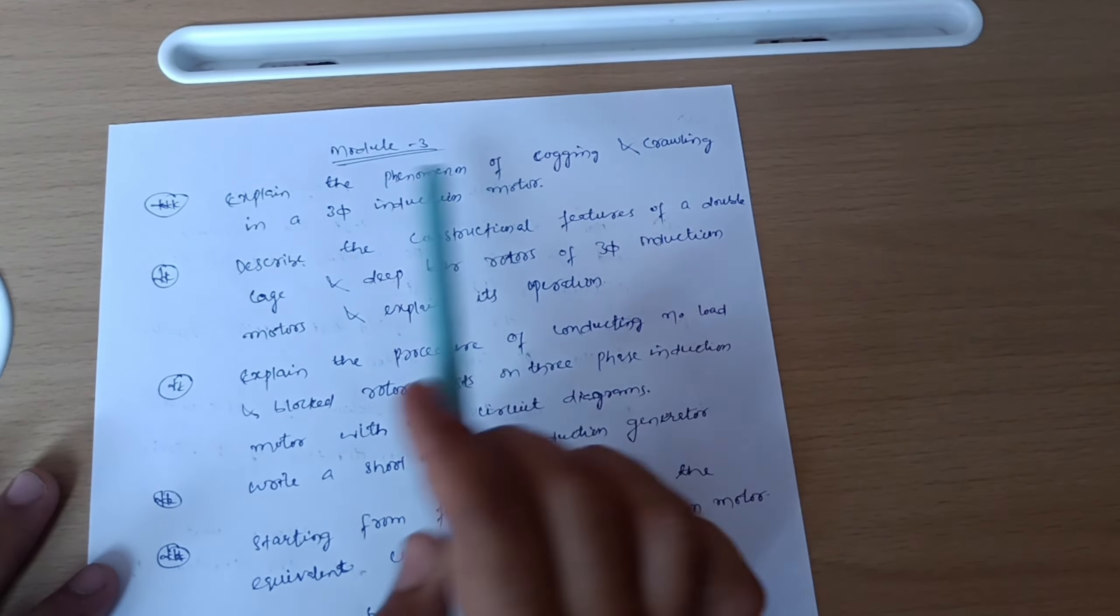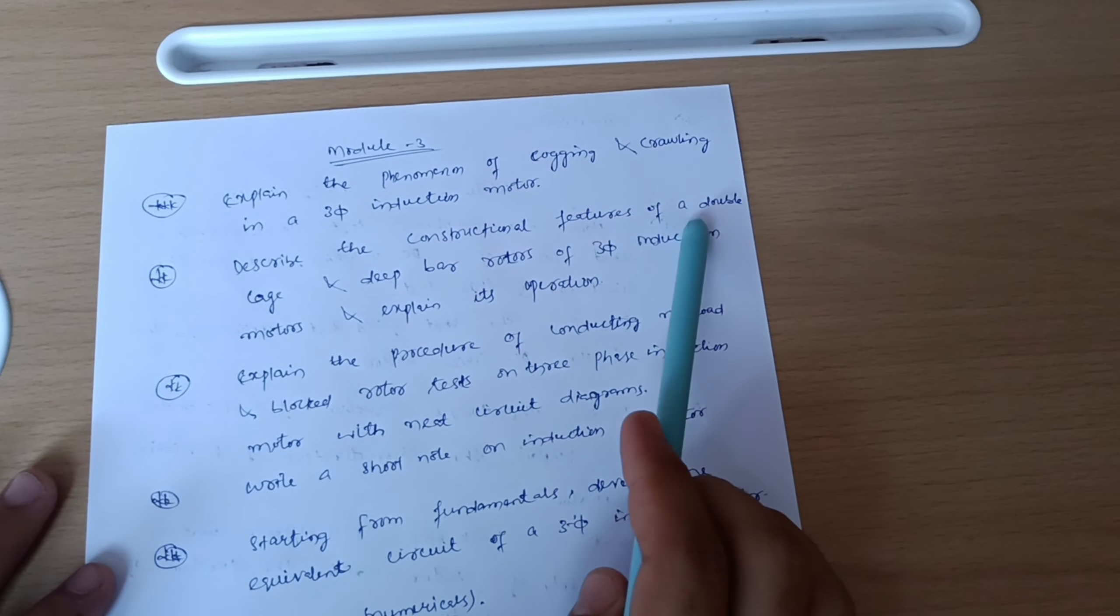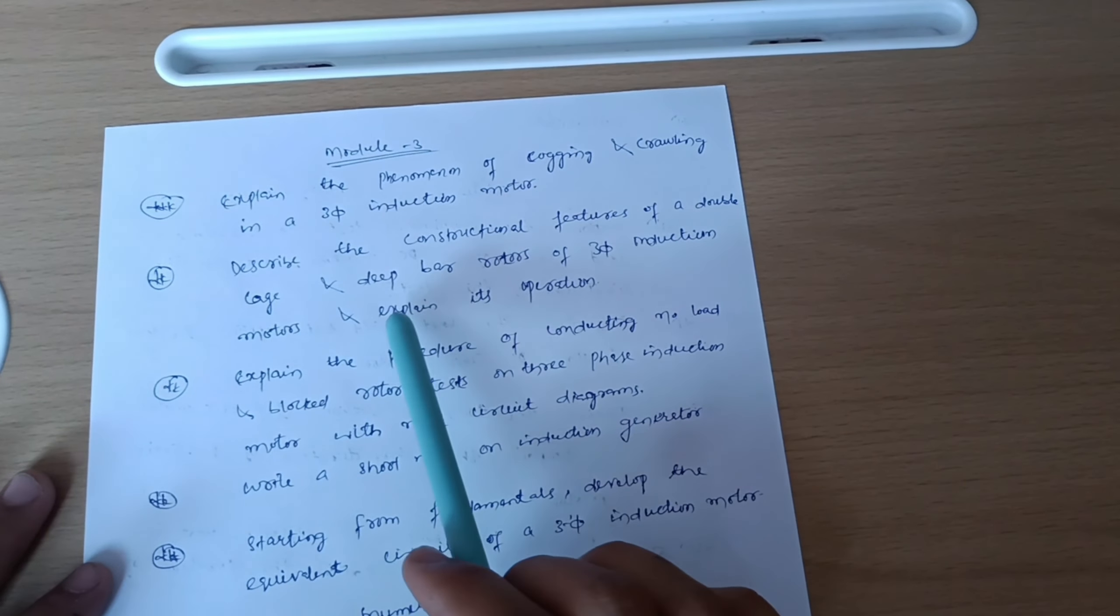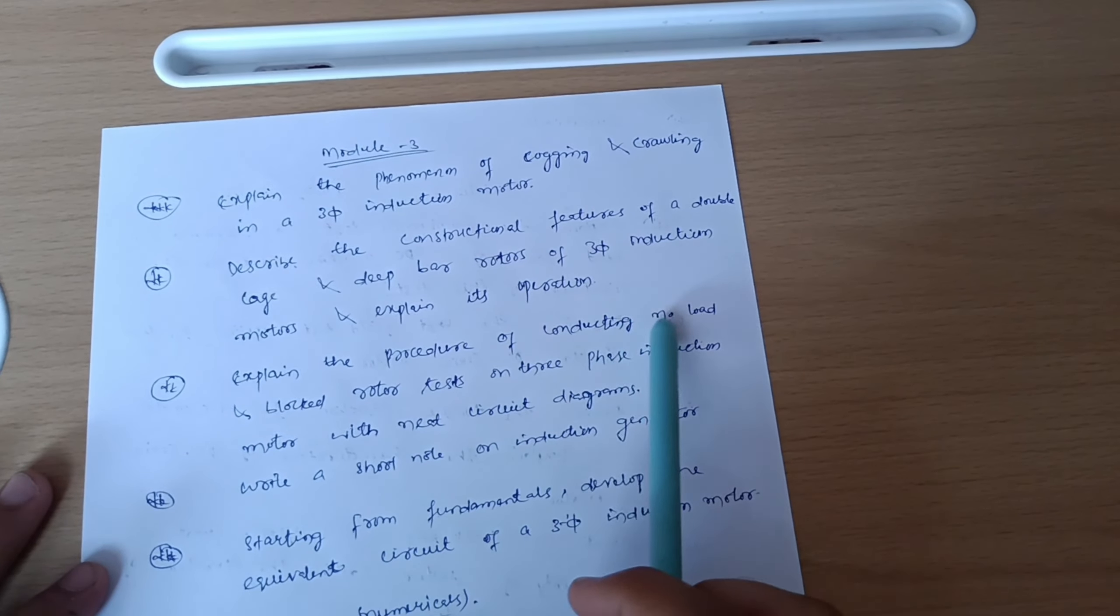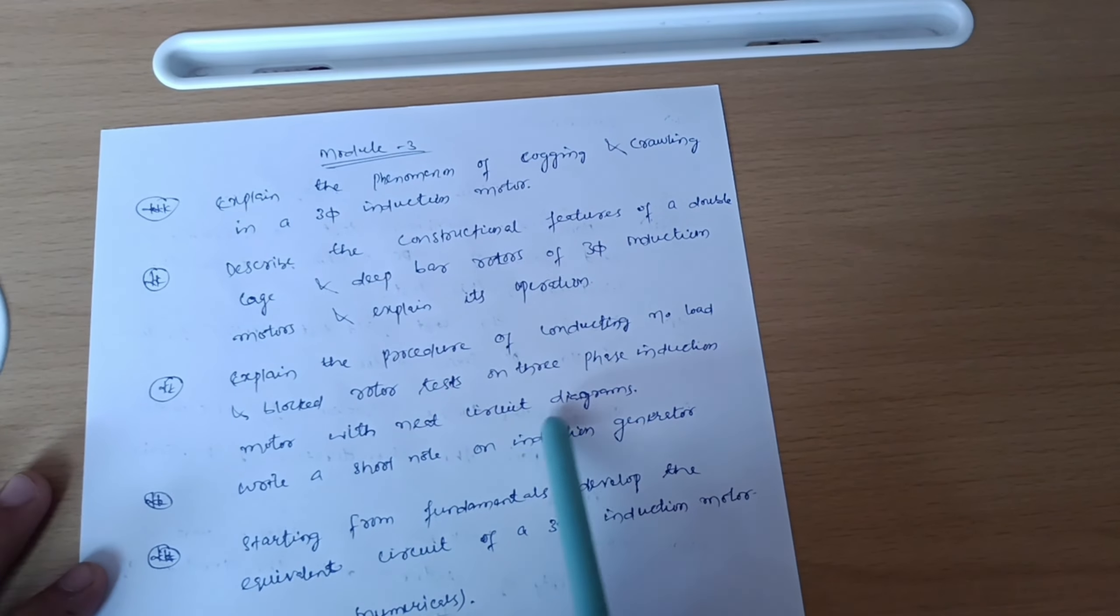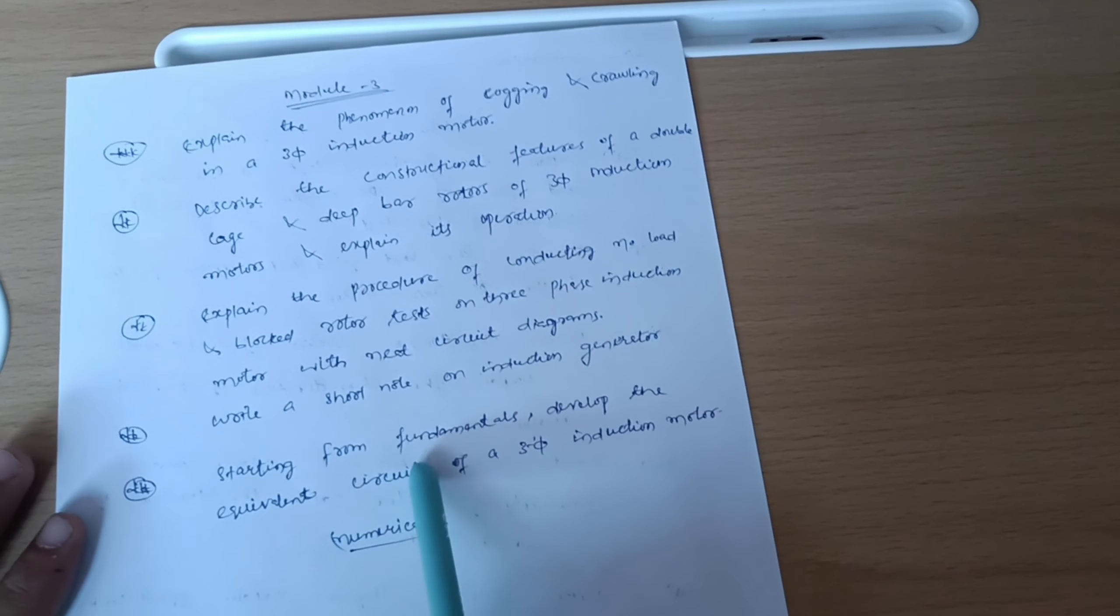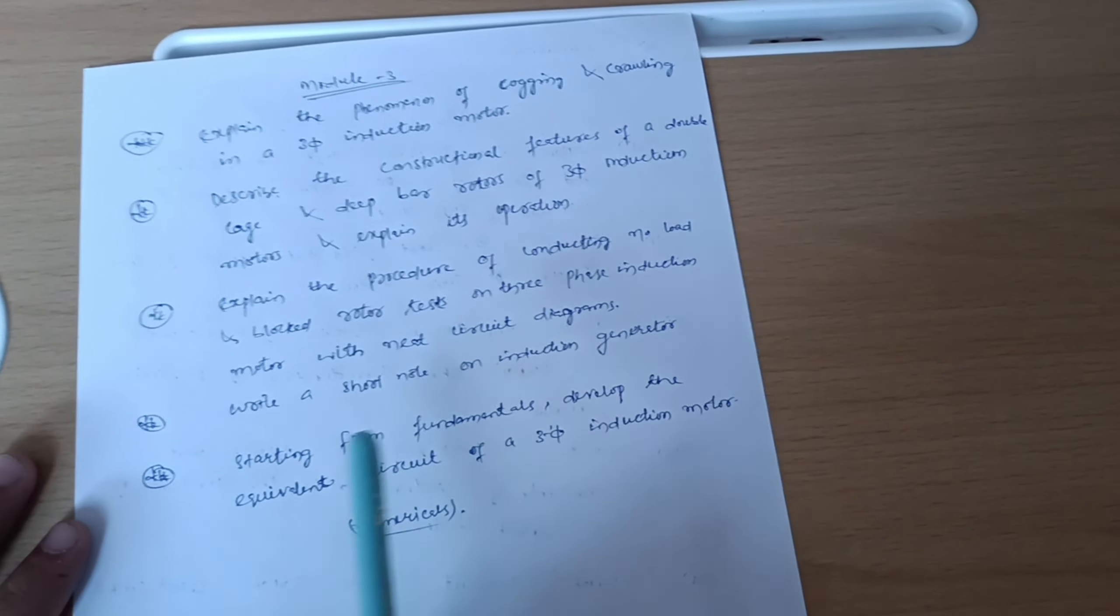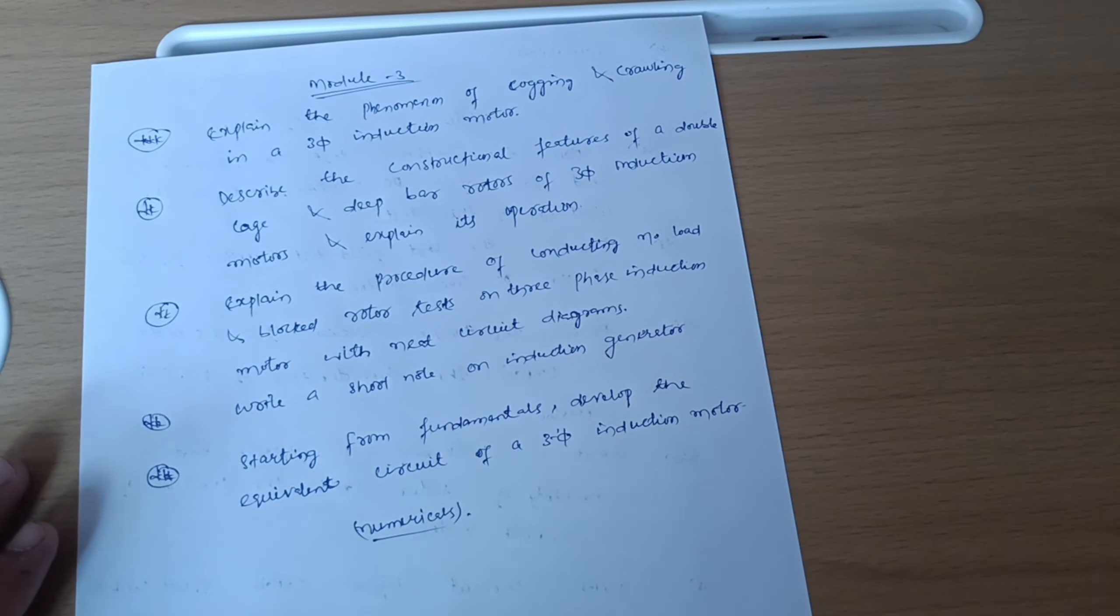Explain the phenomena of cogging and crawling in three phase induction motor. Describe the construction features of double cage and deep bar rotors of three phase induction motors and explain its operation. Explain the procedure of conducting no load and blocked rotor tests on three phase induction motor with neat circuit diagrams. Write a short note on induction generator. Starting from fundamentals, develop the equivalent circuit of three phase induction motor. And also for numericals, you should refer the same.